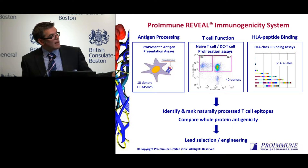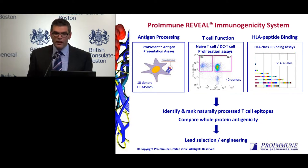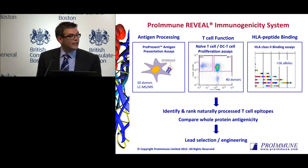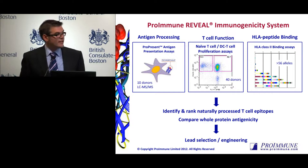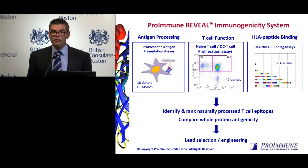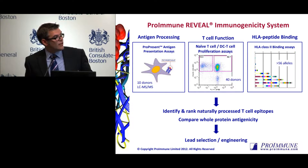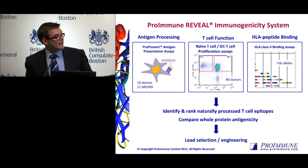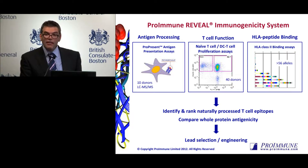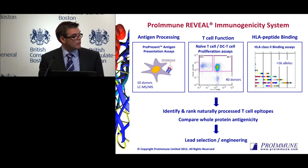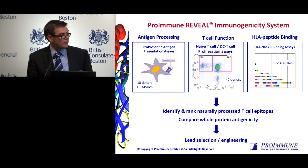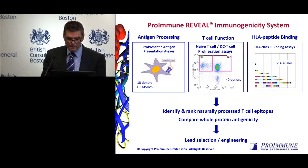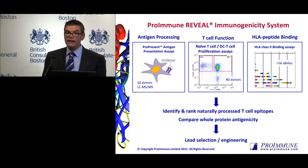Just because a peptide is recognized or presented by an MHC molecule doesn't make it a functional epitope — and that's where these sorts of assays can add value. We're also going to be talking about our MHC peptide binding assays. We've heard about the high throughput advantages and low cost of in silico, but also its limitations in terms of false negatives and false positives. These are assays where we can actually confirm the HLA restriction of peptides. Together, this information can be used to identify and rank naturally processed epitopes and compare whole protein antigenicity, helping us make intelligent decisions.